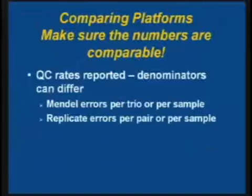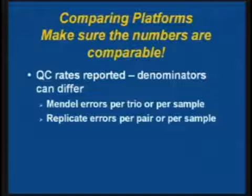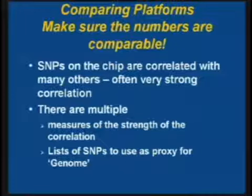When comparing platforms, make sure the numbers are comparable. The QC rates reported vary — the denominators can differ. Mendel errors can be reported per trio or per sample; replicate errors per pair or per sample. A lot of reported differences come down to people reporting different things. The same issue applies to coverage comparisons — SNPs are correlated with many others, there are multiple measures of correlation strength, and multiple lists to use as a proxy. Are they comparing to HapMap? Which version?